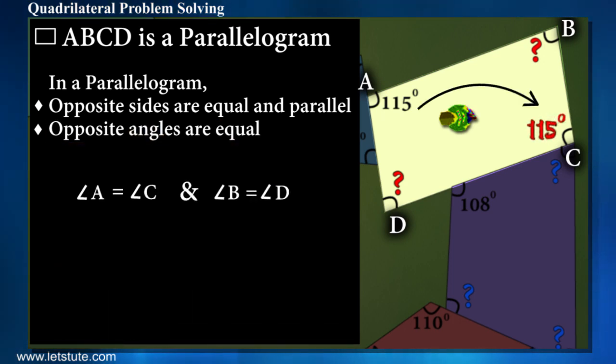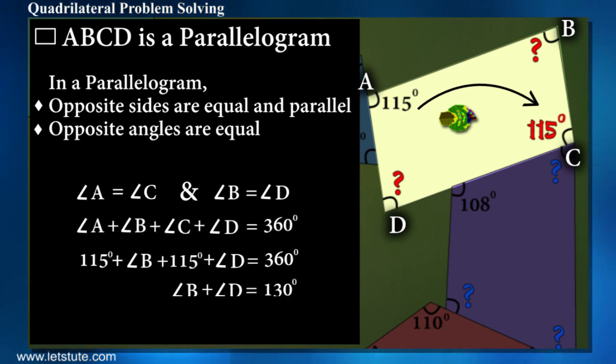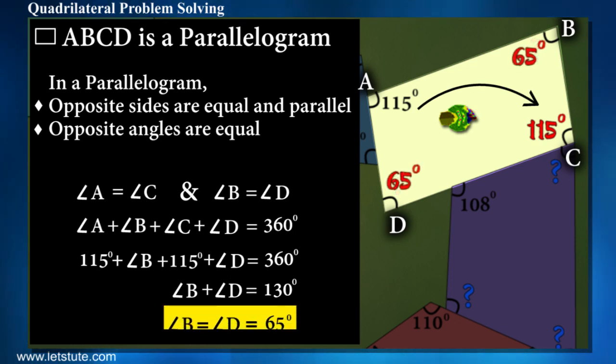So out of the missing three angles, he got one as 115 degrees. And then remaining 130 degrees will be divided into halves to give another two angles as 65-65. How easy, you know? Had you been in this game, will you be able to solve it?